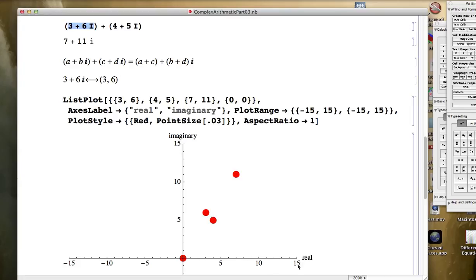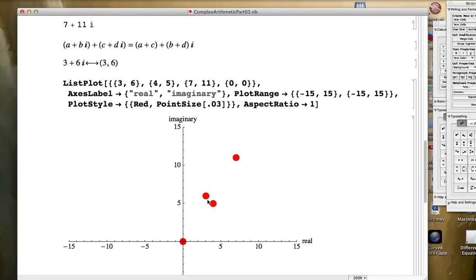Any dot that is along the real axis really is a real number. It is the additive identity, 0 plus 0i, added to any other complex number, is that other complex number. And what we noted was that this forms, these dots seem to form a parallelogram if you connect them with straight line segments.